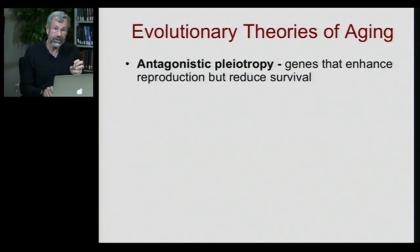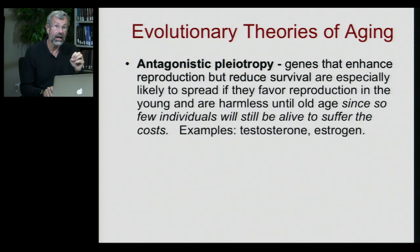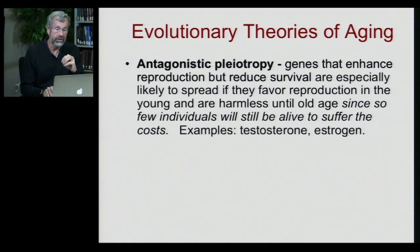We have antagonistic pleiotropy, where genes enhance reproduction but reduce survival. These are especially likely to spread if they favor reproduction in the young and are harmless in old age, since so few individuals will still be alive to suffer the costs.